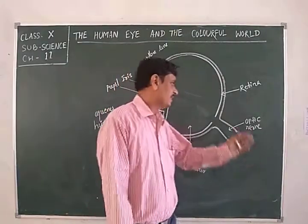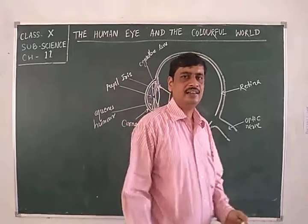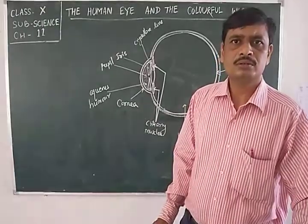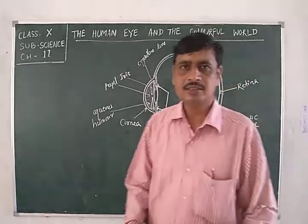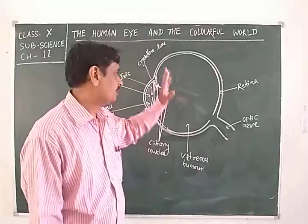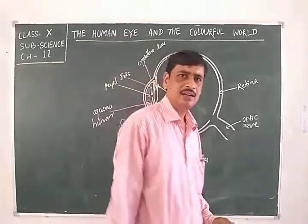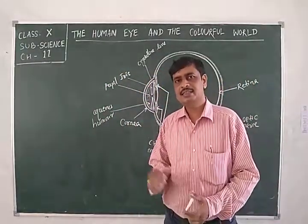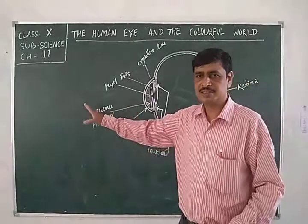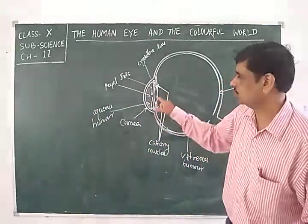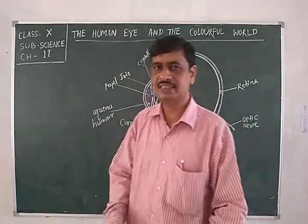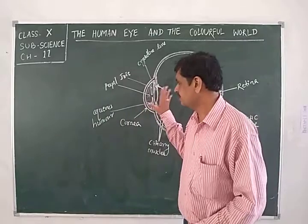The eye is like a camera. When a camera captures the image of any object, similarly the eye can capture images. When we see any substance present in front of us, the image of that substance is captured by refraction through the eye lens. Let's discuss the parts of the human eye.